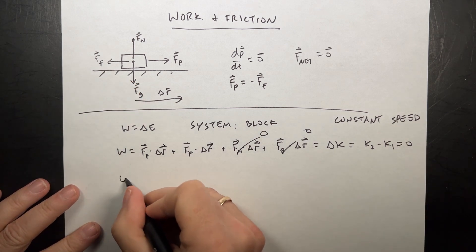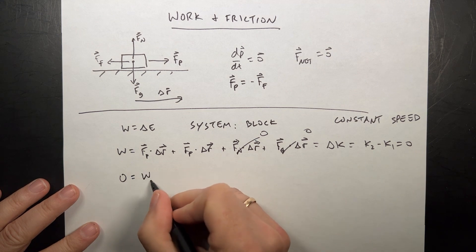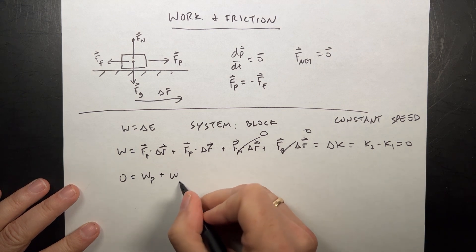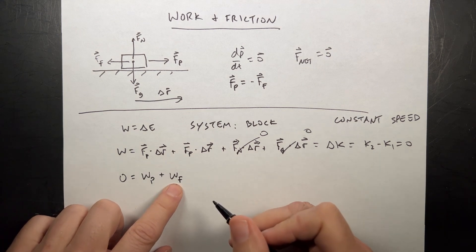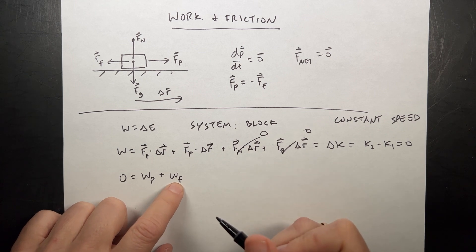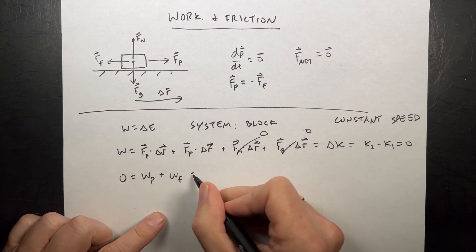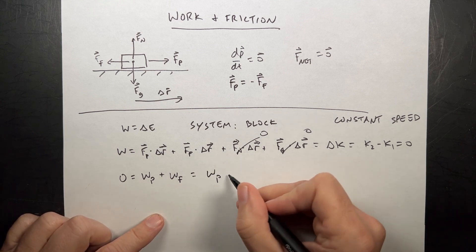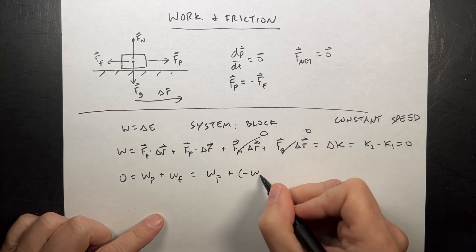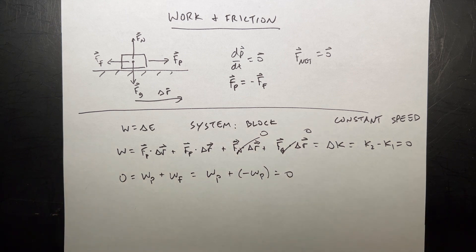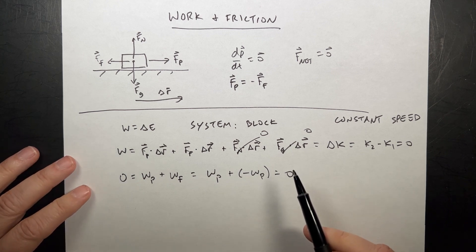So this is equal to zero. So now I have zero equals work done by the push plus work done by friction. And I know that the frictional force has to be equal and opposite to the push force. So this is actually going to be equal to work done by the push plus negative work done by the push equals zero. And everything worked out and everyone's happy. Just like up here. The total work done is zero. The change in kinetic energy is zero. Everyone's happy.